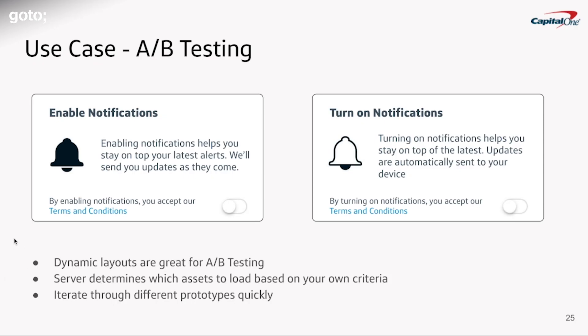One of the first use cases we found — and maybe an obvious example — was A/B testing. If all our content is defined on the backend, it would be extraordinarily quick to update icons or text and run smaller experiments. The server determines what type of content to show, so we wouldn't need any UI logic to differentiate between test population A or test population B. This enables us to iterate through different prototypes extraordinarily quickly.